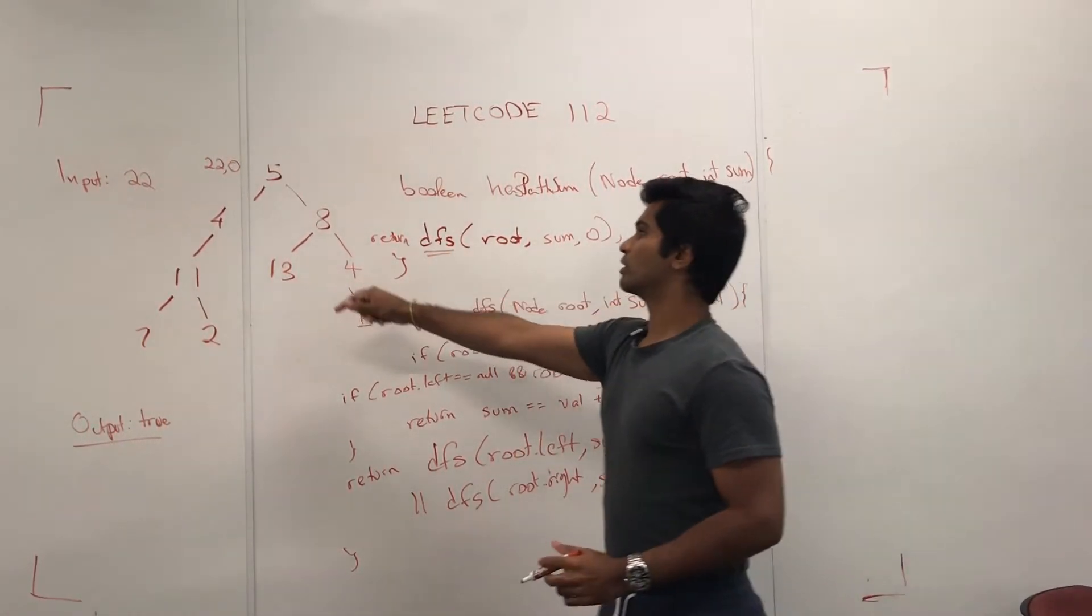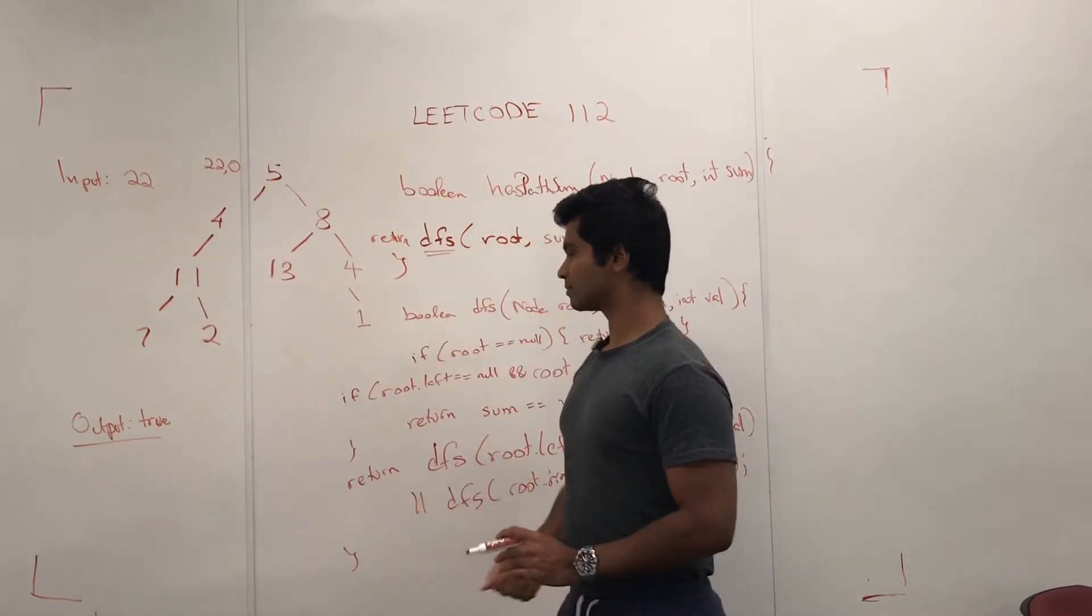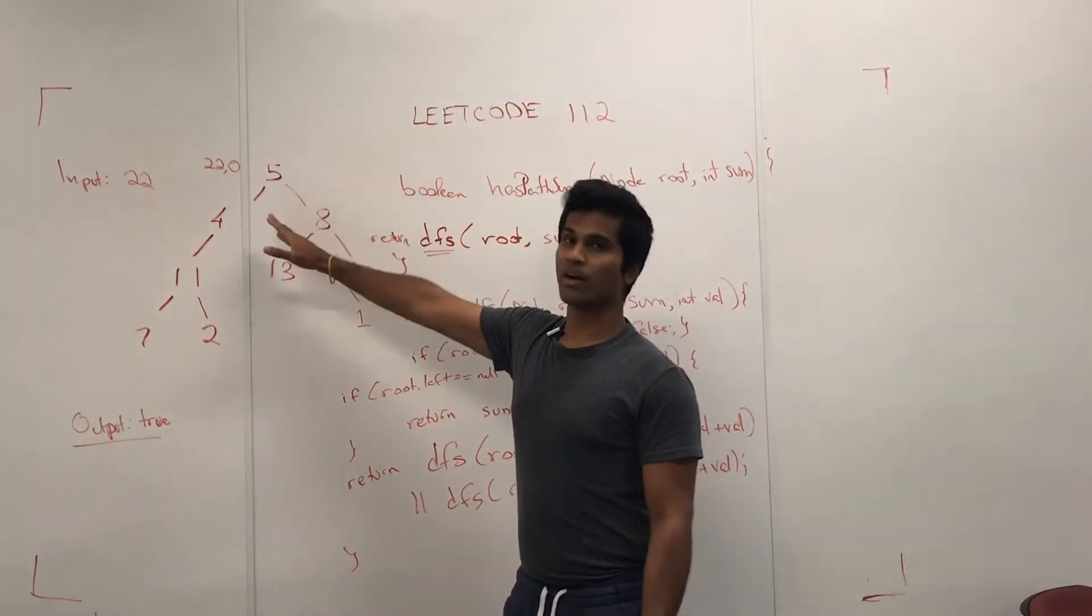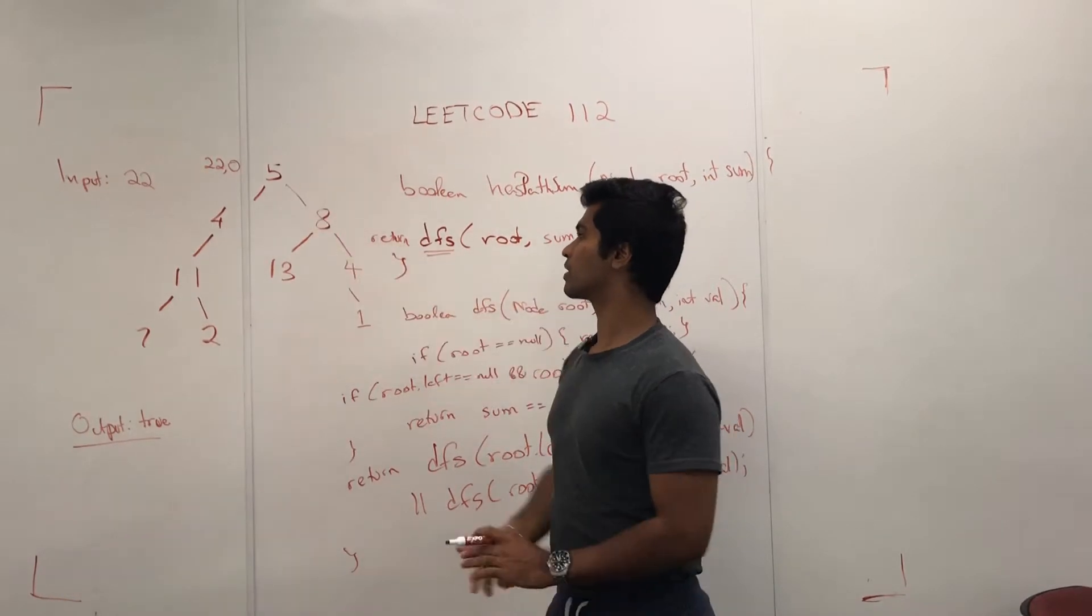Now, let me show you what that looks like on the tree. When we first pass this in, when we ask 5, 5 is going to say, hold on guys, let me ask my left and right child.